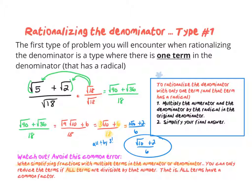I can't reduce just the 2 and the 6, because that's only two of the terms. If I want to reduce all terms by 2, I would have to reduce the coefficient 1 on root 10 by 2 as well. The numbers 1, 2, and 6 do not have a common factor, so I cannot simplify any further. The final answer is root 10 plus 2 over 6.